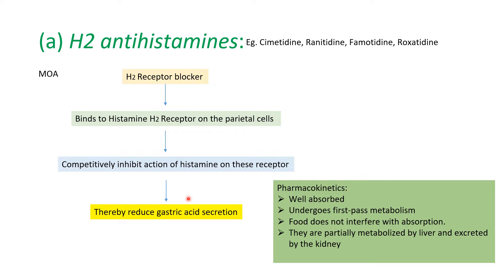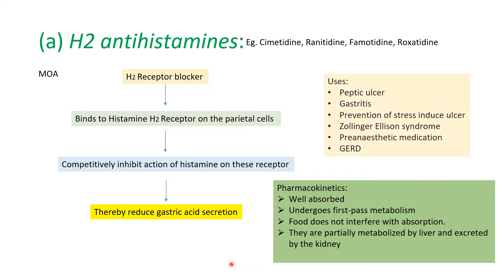Regarding pharmacokinetics: H2-antihistamines are well absorbed, undergo first-pass metabolism, and food does not interfere with absorption. They are partially metabolized by the liver and excreted by the kidney. Uses include peptic ulcer, gastritis, prevention of stress-induced ulcer, Zollinger-Ellison syndrome, pre-anesthetic medication, and GERD.